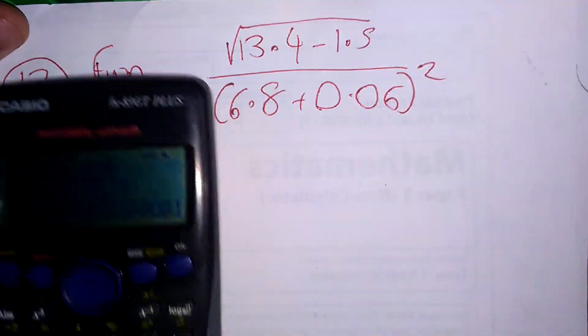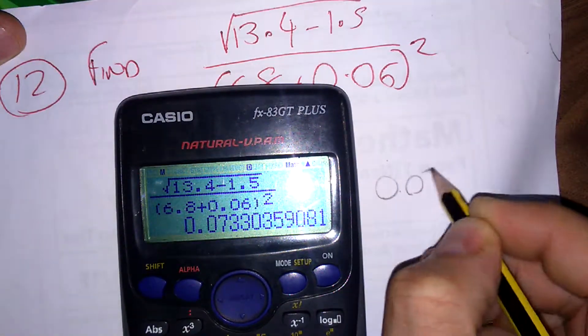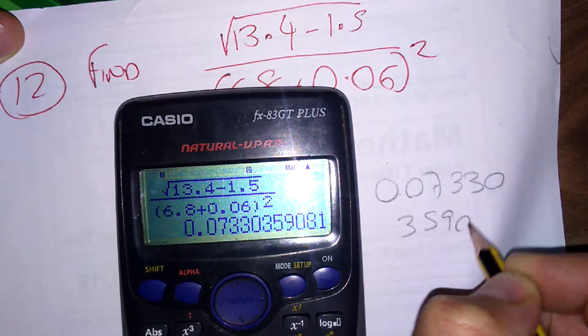I've got a decent calculator, so I'll just press equals. It normally says write down all the numbers on your calculator display, so: 0.07330359081.